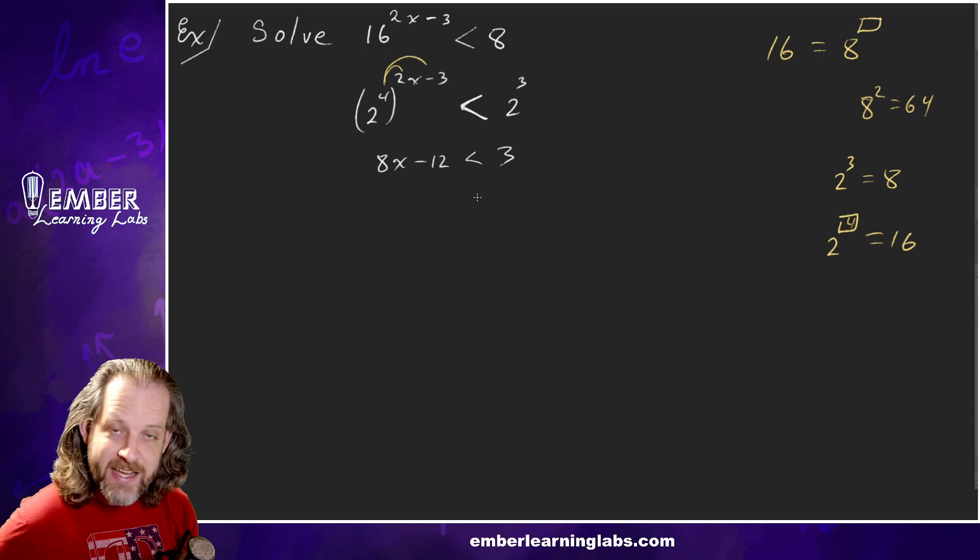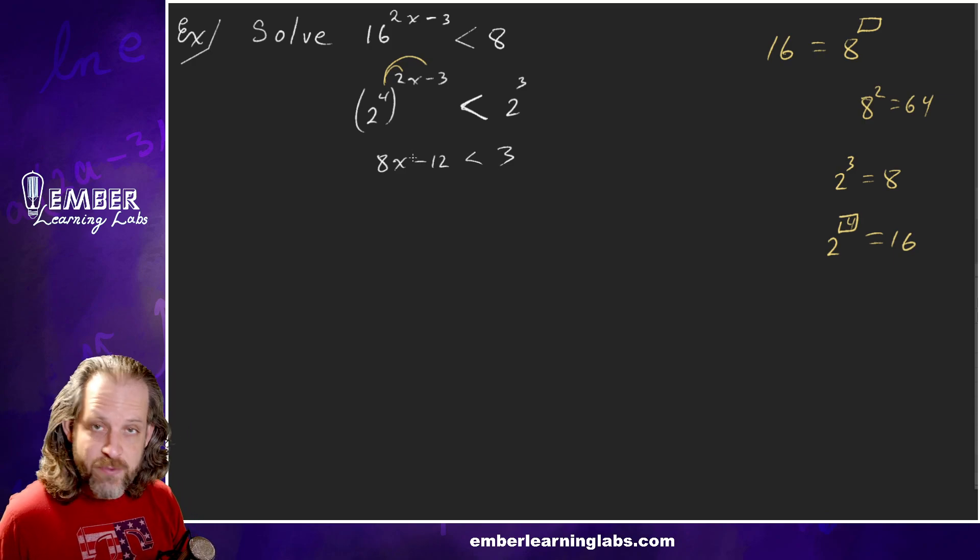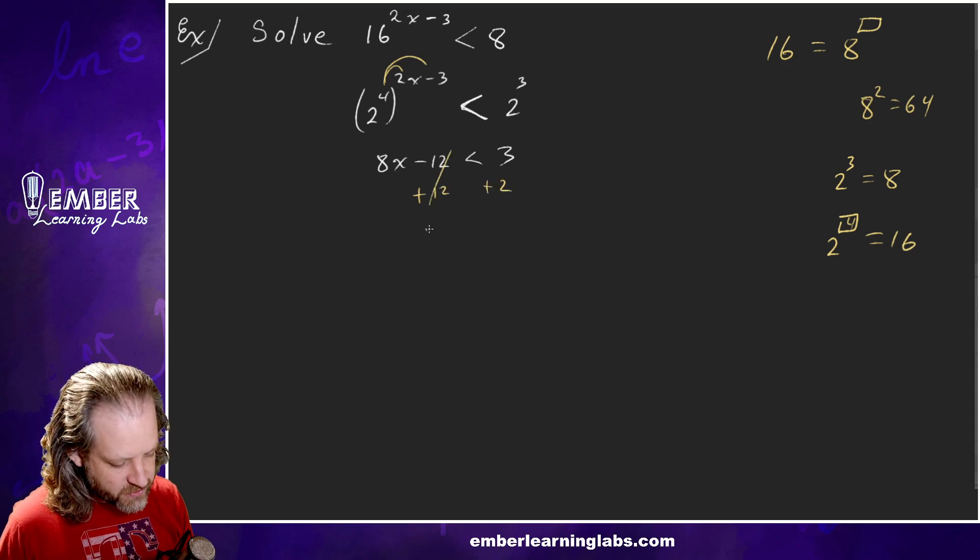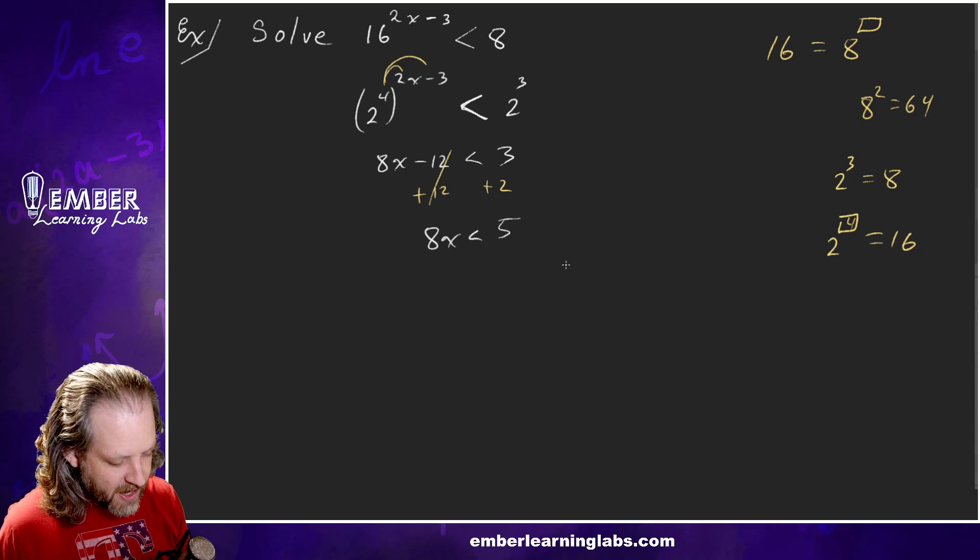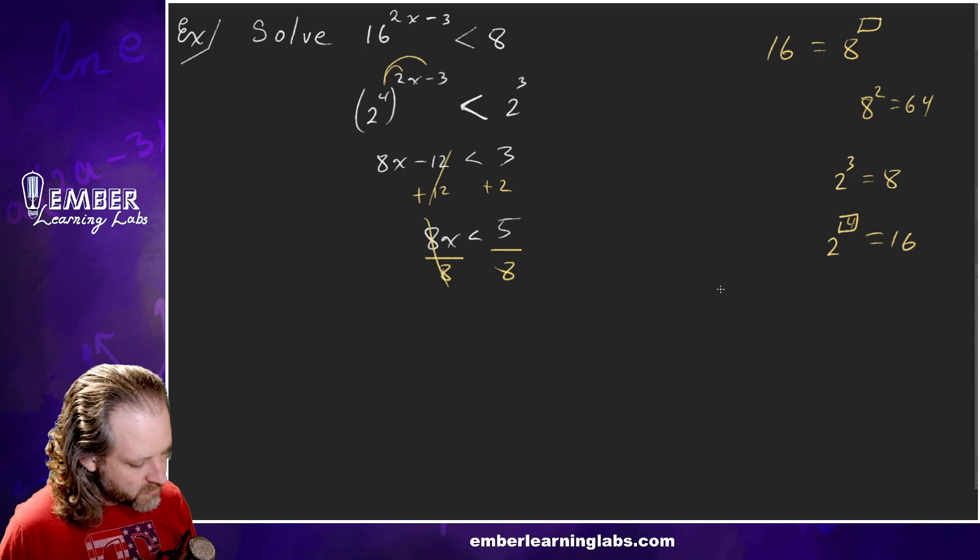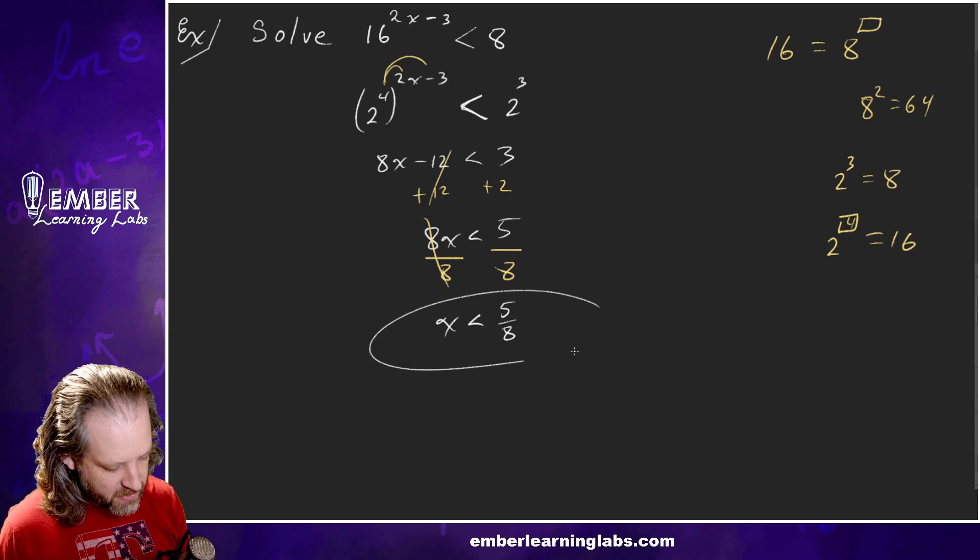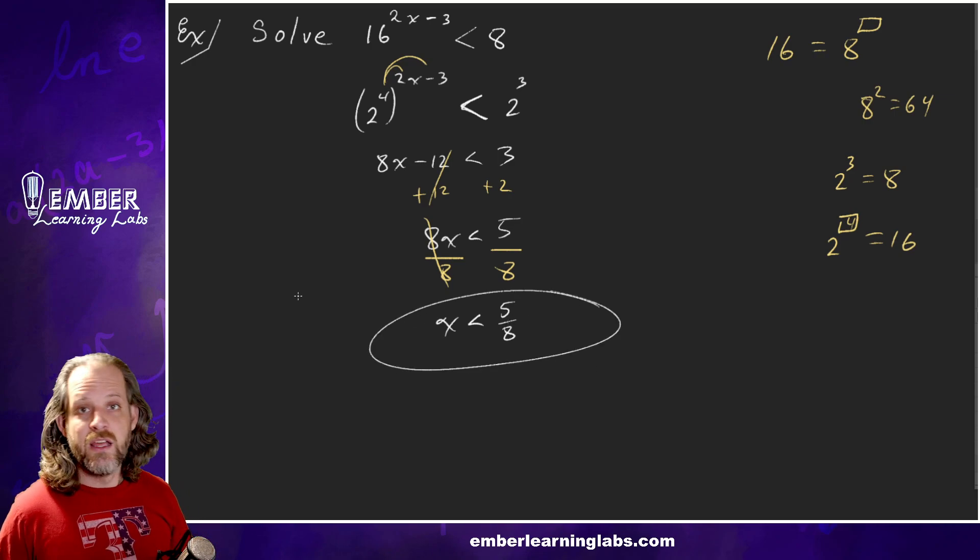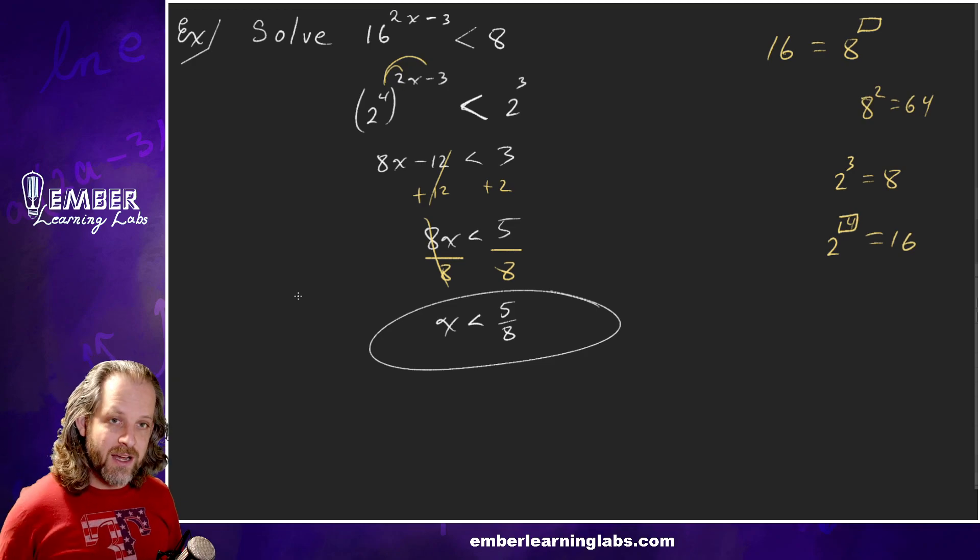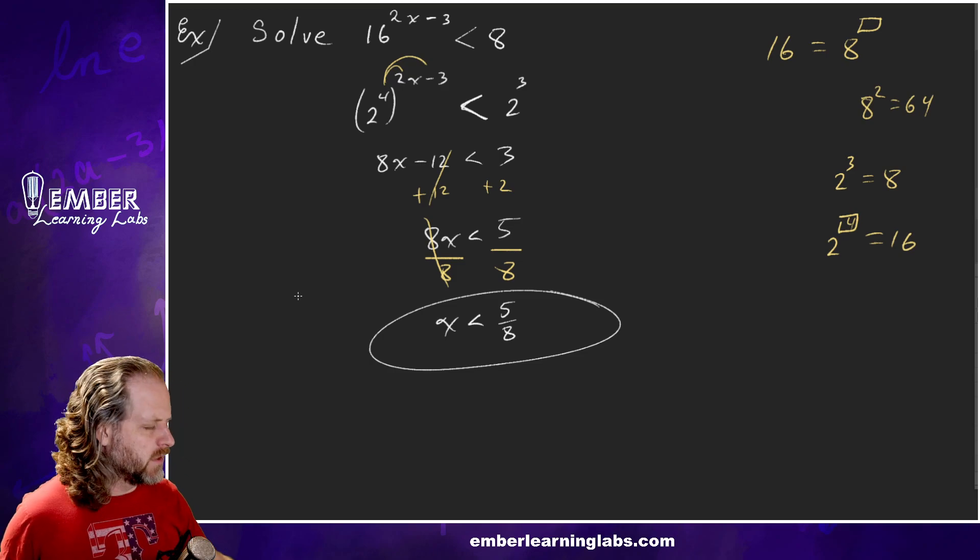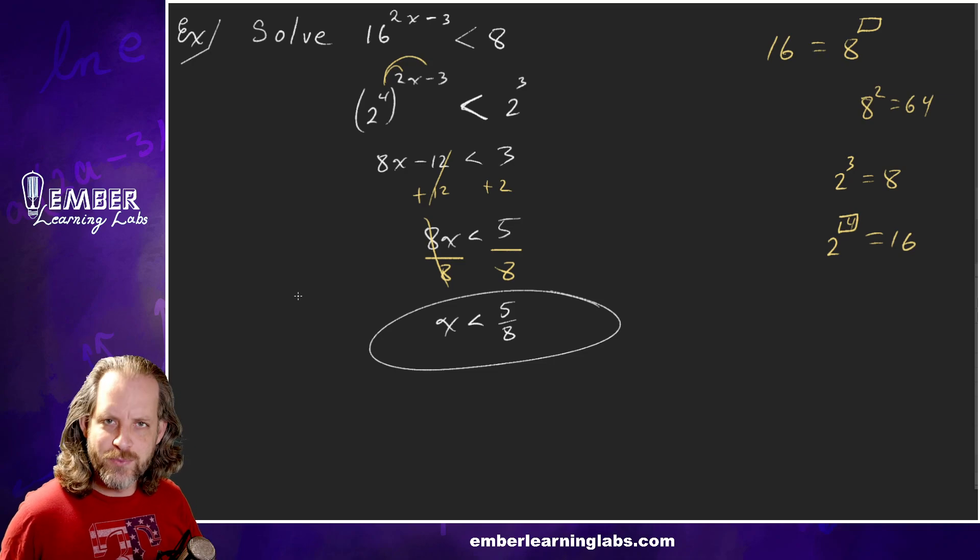Let's solve for x. That's easy peasy now. We've been doing this. This is a two-step equation. You've probably been doing this since middle school. Plus 12, plus 12. That cancels, leaving us with 8x is less than 15. Get rid of the 8 by dividing by 8 on both sides. So x is less than 15/8. Easy peasy, lemon squeezy. That's it. We're done. See you in the next one. Have a great day. Don't forget to like this video and give us a comment and subscribe. Bye-bye.